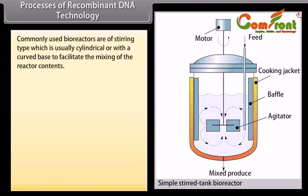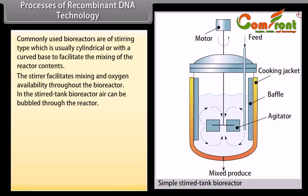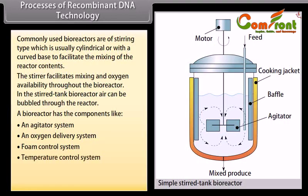Commonly used bioreactors are of the stirring type, which are usually cylindrical or with a curved base to facilitate mixing of the reactor contents. The stirrer facilitates mixing and oxygen availability throughout the bioreactor. In the stirred tank bioreactor, air can be bubbled through the reactor. A bioreactor has components including an agitator system, an oxygen delivery system, a foam control system, a temperature control system, a pH control system, and sampling ports.